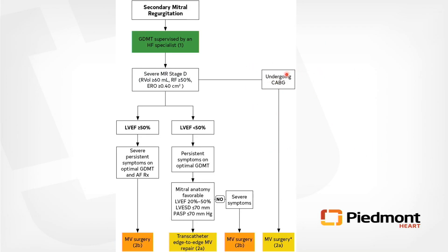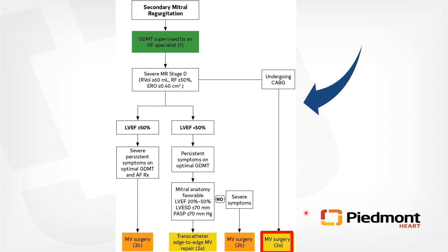Secondary MR is a whole different beast. Your team needs to include heart failure physicians and EP physicians for rhythm control — you need to maximize GDMT. After that, if still symptomatic, patients only go to surgery if they're having a CABG. Otherwise, TEER in this patient population is also a 2A indication.